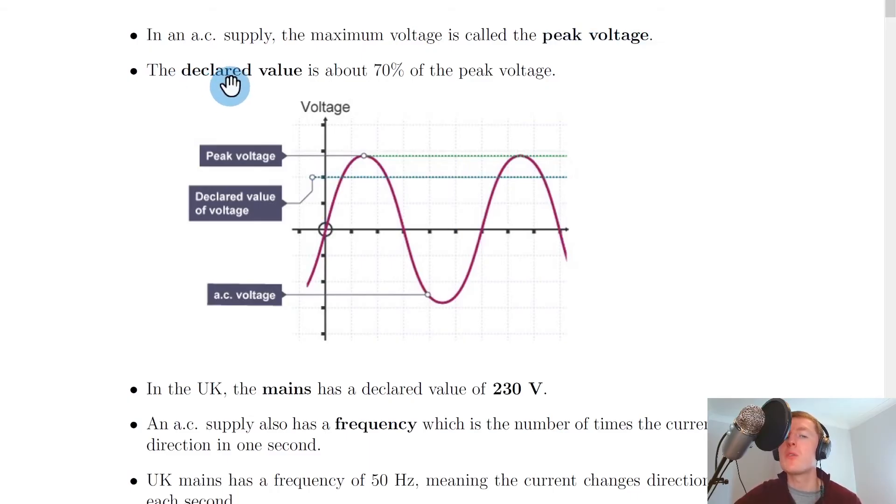And we also have something called the declared value of the voltage, and that is about 70% of the peak voltage. So this line here cutting through at about 70% of the peak voltage, that is the declared value of the voltage.